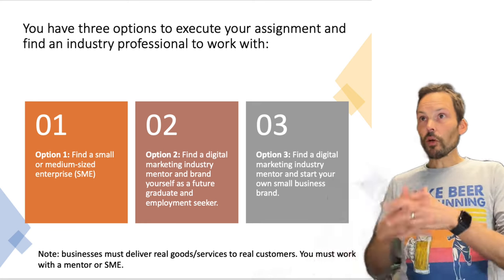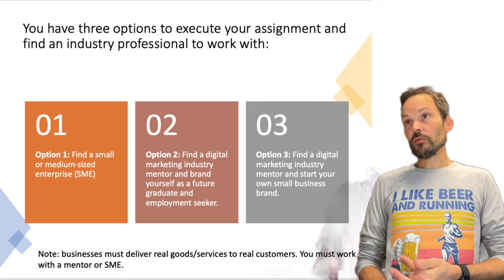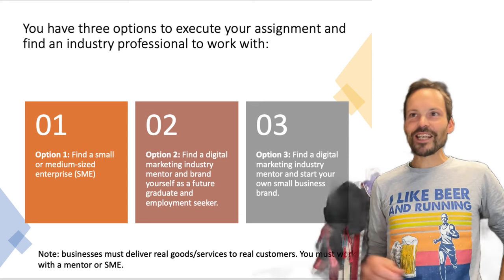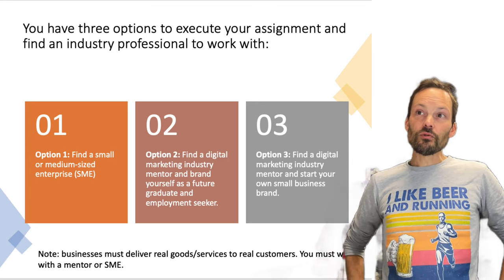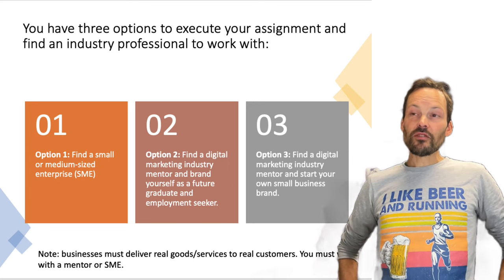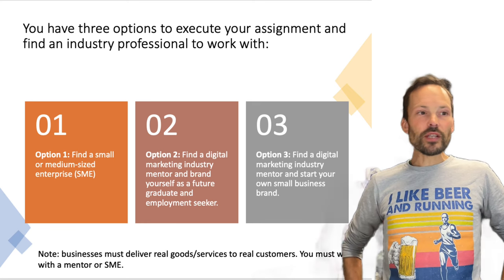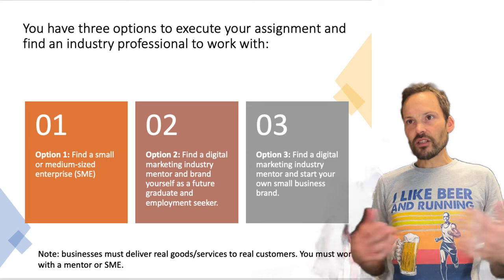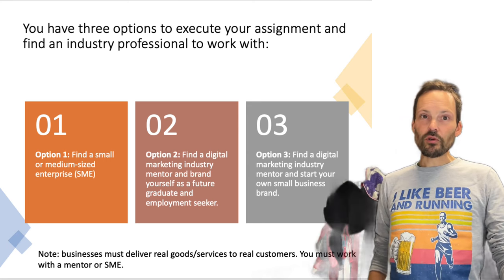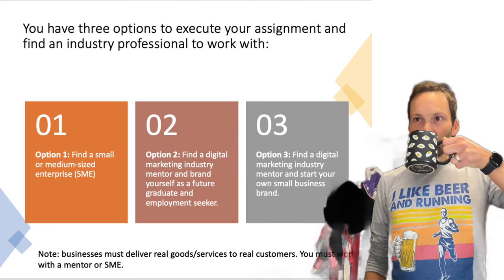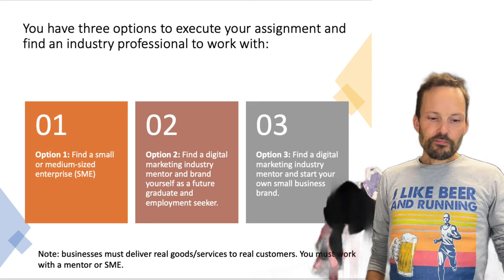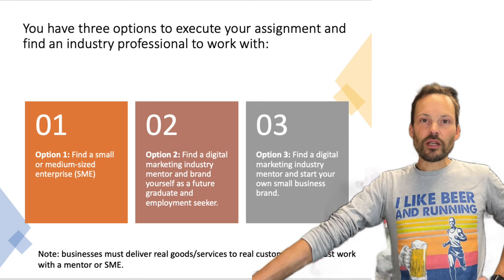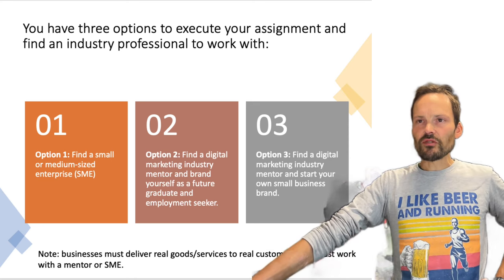Let's look at your options for the assignment — three broad options for how you can execute assignments 1 and 2. Option one is that you find a small or medium-sized enterprise to work with, anywhere in the world. The only requirement is that it is an SME — you can't work for Coca-Cola or McDonald's. If you're unsure if your business fits the criteria, discuss that with your tutor.